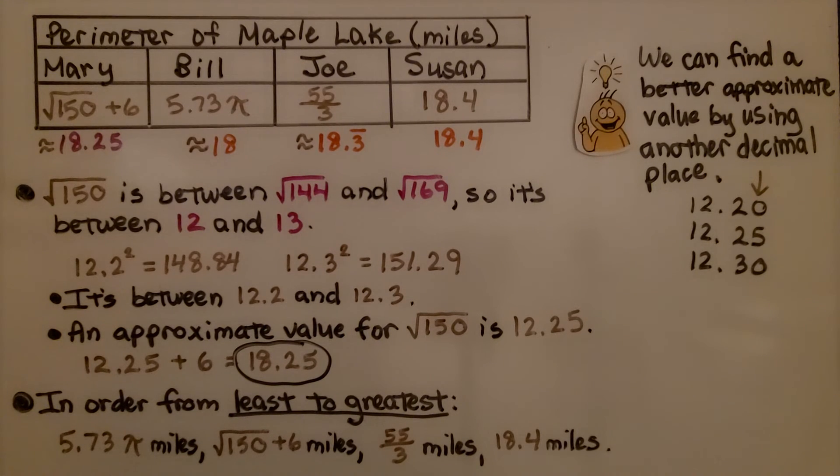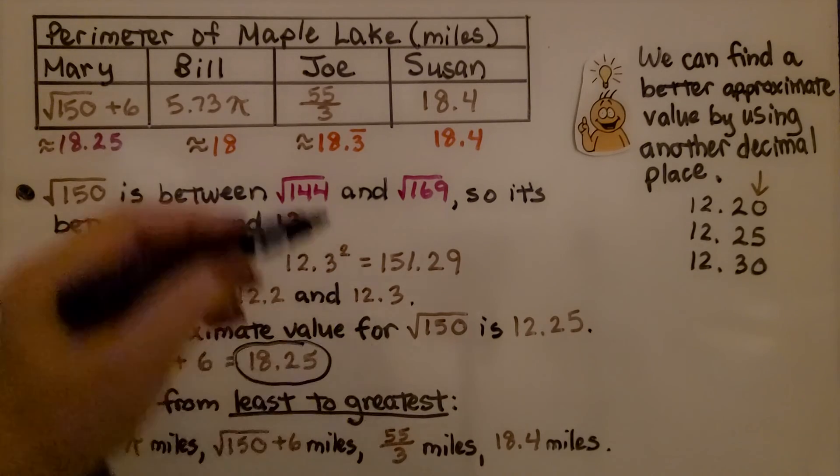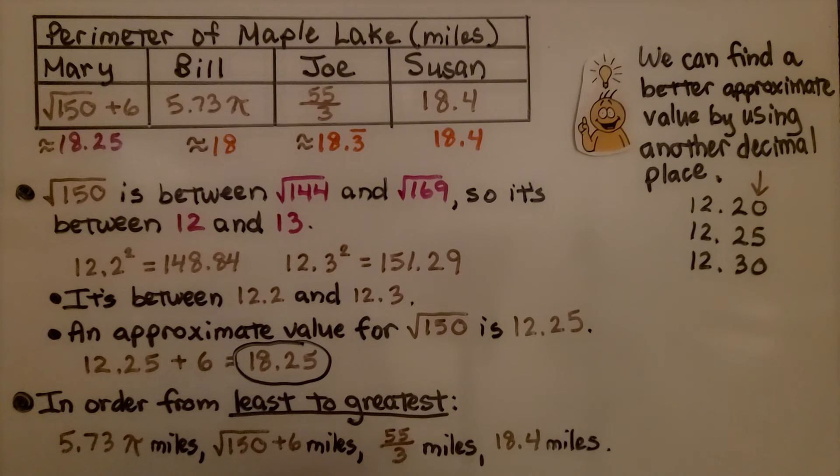So in order from least to greatest, we've got 5.73 times pi, because that's 18. The next greatest would be the square root of 150 plus 6 miles, because that's 18.25. The next one would be 55 thirds, because that's 18.3, and then we would have 18.4. They're in order from least to greatest.